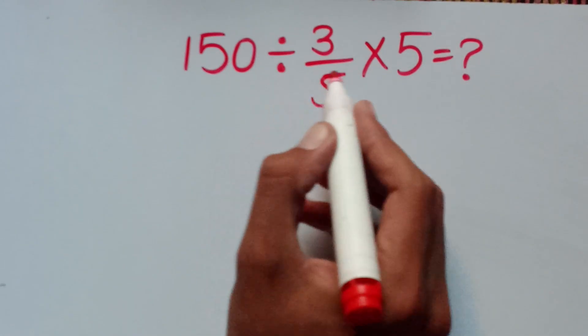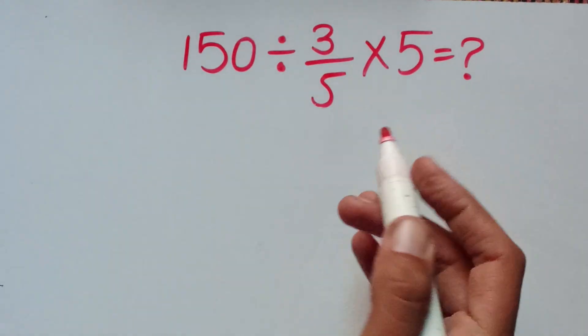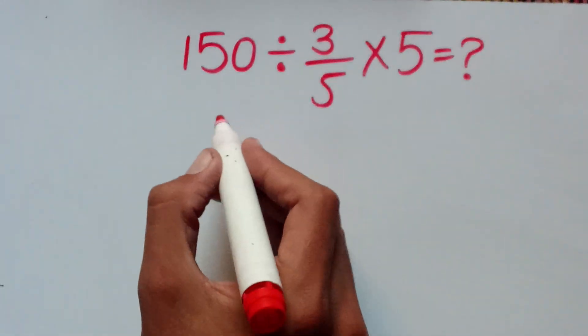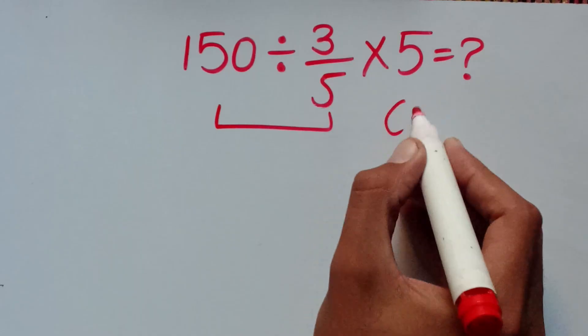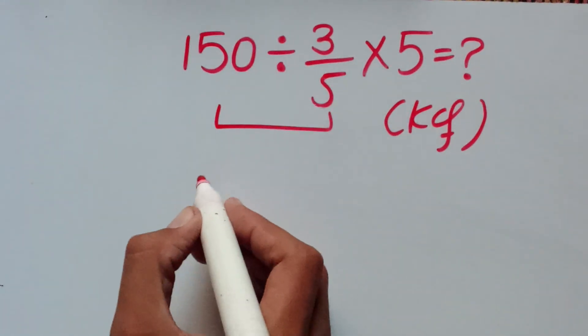First we solve the division because multiplication and division have equal priority and we solve from left to right. To solve this part we follow the rule of KCF: keep, change, flip.